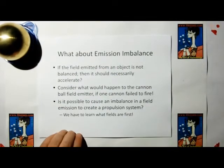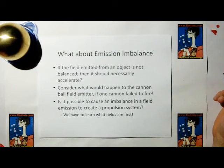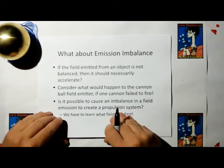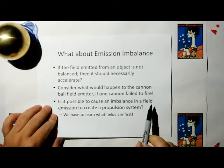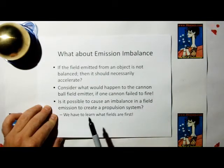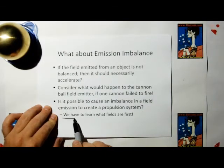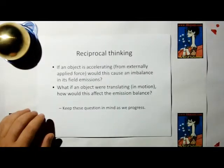All right, what about an emission imbalance? I mean, if the field emitted from an object is not balanced, then it should necessarily accelerate. I mean, consider what would happen to the cannonball field emitter if one of the cannons failed to fire. So is it possible to cause an imbalance, intentionally cause an imbalance in a field emission, to create a promotion system? We have to learn a lot more about fields first.